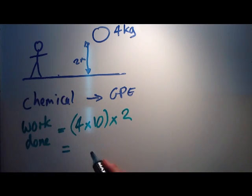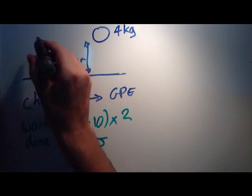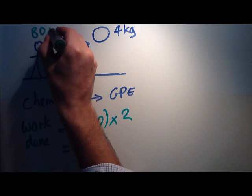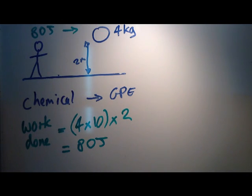The work done by that person will be, so 4 times 10 times 2 gives us 80 joules. So the person is going to expend 80 joules to the ball.